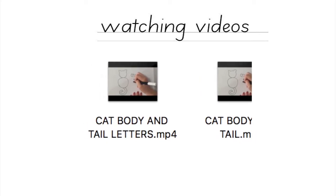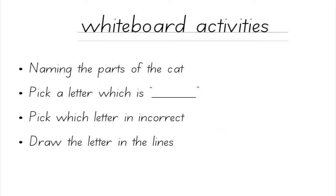Another idea is to incorporate whiteboard activities with the whole class before writing. This could include drawing the three lines on the board, then drawing a cat and having students point out different parts of the cat.